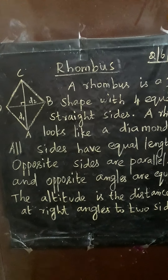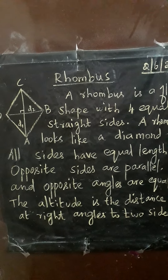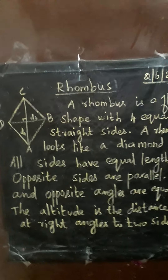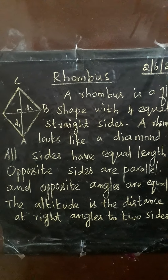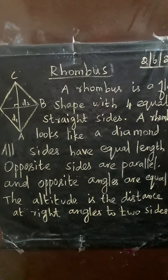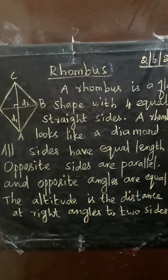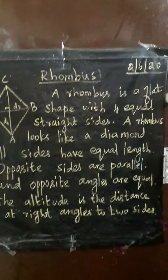All sides have equal length. Opposite sides are parallel. Opposite angles are equal. The altitude is the distance at right angles to two sides.